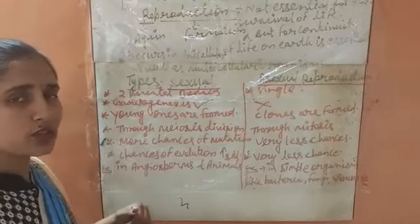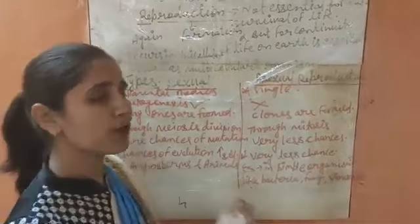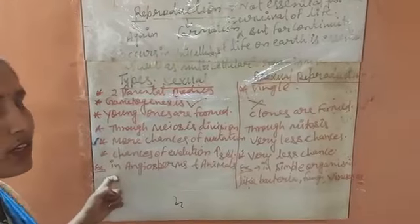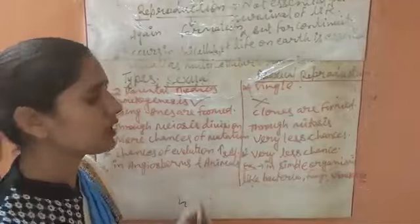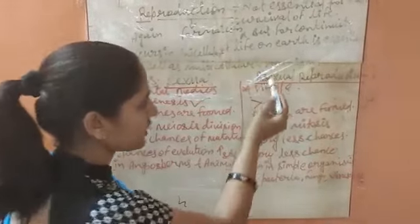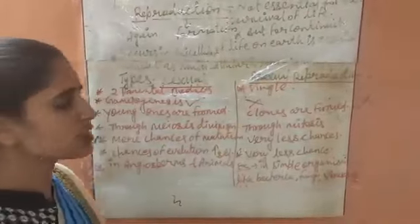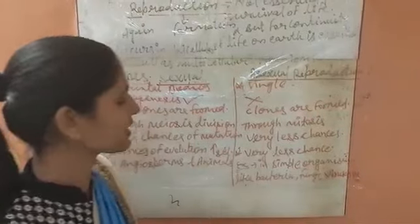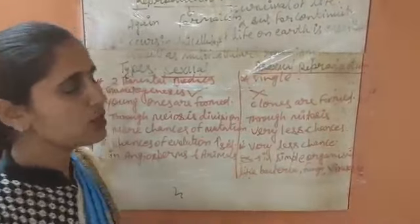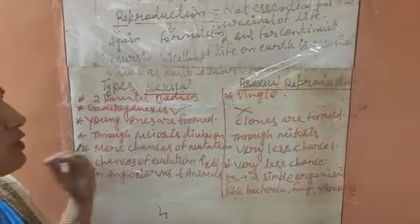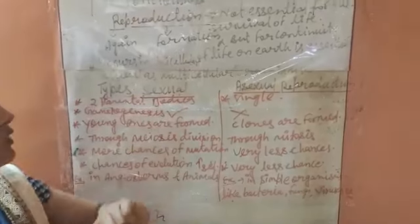Sexual reproduction occurs in angiosperm plants and in all animals. Asexual reproduction mostly occurs in simple organisms like bacteria, fungi, viruses, protozoa, etc. So that is all about reproduction — a brief introduction to reproduction as a feature covered in the first chapter, the living world.